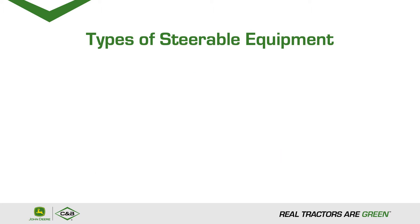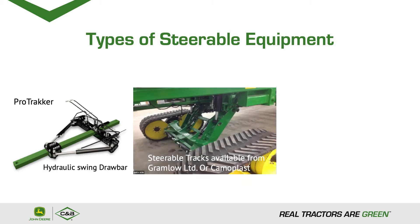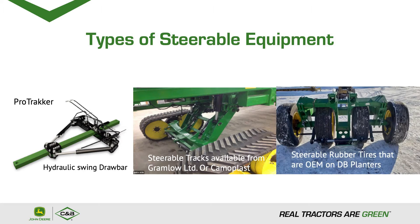Additional types of steerable equipment: First, we have a Pro Tracker hydraulic swing drawbar, available for 9000 series RT tractors. Second, steerable tracks available from Gramlo Limited or Camelplast, available for 1770, 1775, and most models of DB planters. And third, steerable rubber tires that are original equipment manufacturer on DB planters, specially ordered.